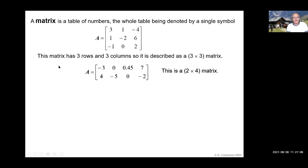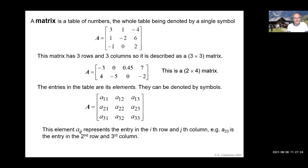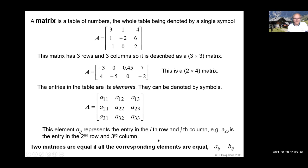So this is a three by three matrix. It can be any sort of shape — this is a two by four matrix, two rows and four columns. The entries in the table are called the elements of the matrix and they're denoted by symbols. A₂₃ is in the second row and the third column. So far so simple.